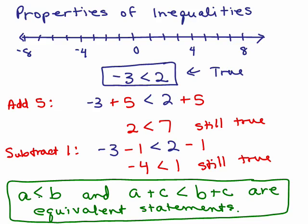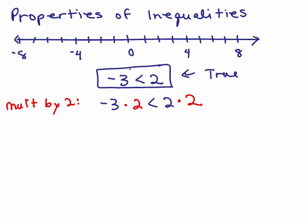So if you start with some inequality — a is less than b — and you add or subtract some number c to both sides, you get an equivalent statement: a plus c is less than b plus c. Now let's start with negative 3 is less than 2 and see what happens if we multiply both sides by 2. Negative 3 times 2 is negative 6, and 2 times 2 is 4. Is negative 6 less than 4? Yes, it's still true — multiplying by 2 preserved the inequality.